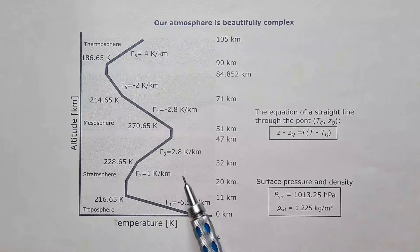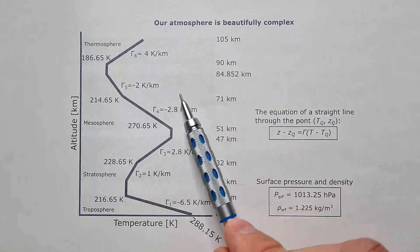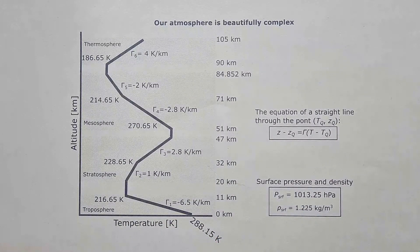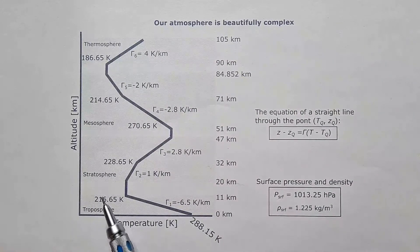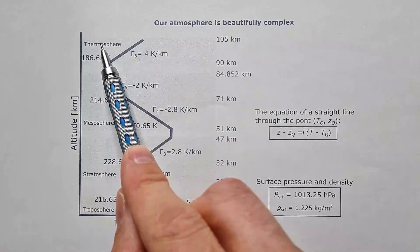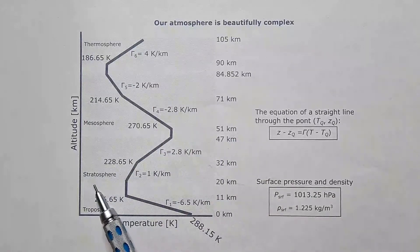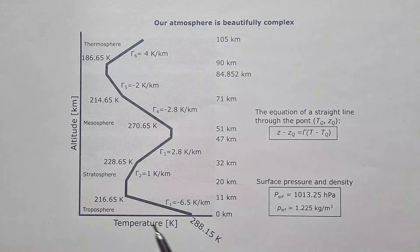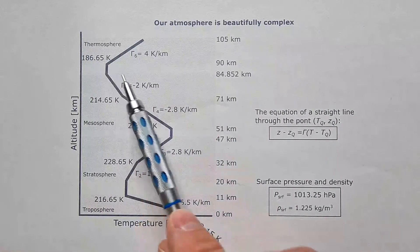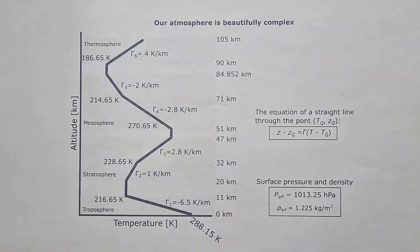Shaded regions represent different layers in the atmosphere where temperature is changing with height. These are the troposphere, stratosphere, mesosphere, and thermosphere. The white regions in between are the layers where the temperature is constant with height, and we call them pause layers, as you will recall from my video on the temperature profile in our atmosphere.